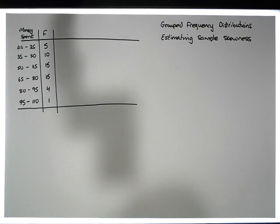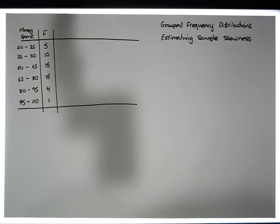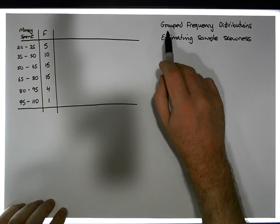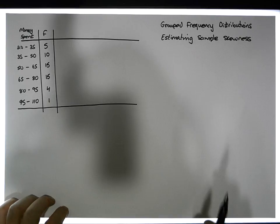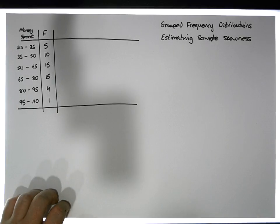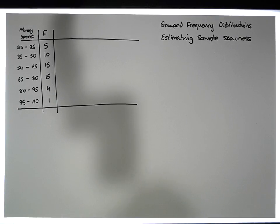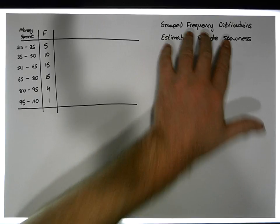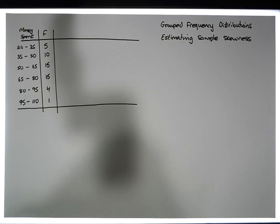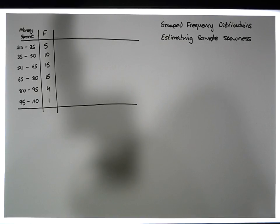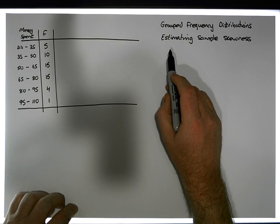Hi guys, this is Jonathan Lambert with the Mathematics Development and Support Service at the National College of Ireland. This short video — another in our series dealing with grouped frequency distributions — is going to concentrate on how we can estimate sample skewness from those grouped frequency distributions.